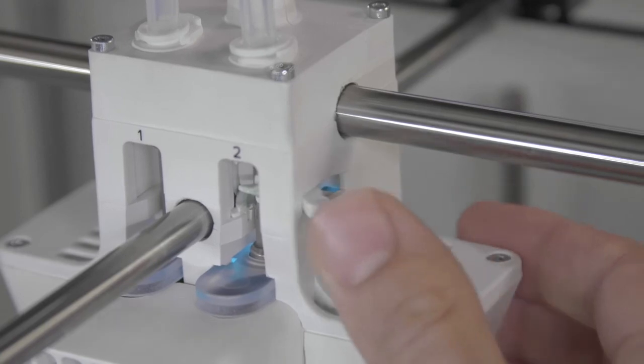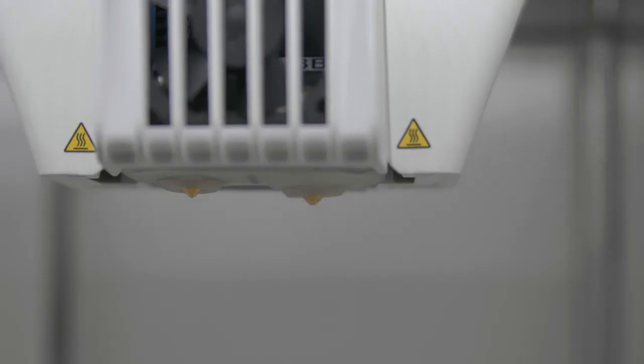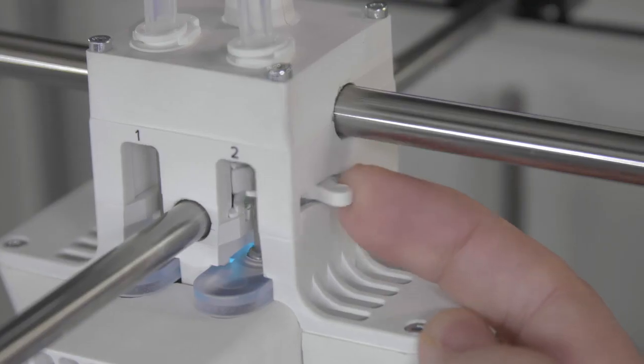As a final check, manually lift and lower the second print core. Check if the fan bracket remains closed as the second print core is lowered.